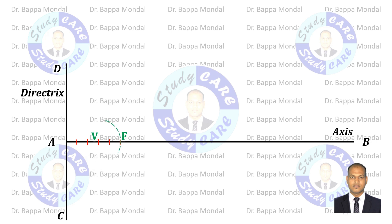Now draw an arc by making the center point at V with 20 millimeters radius. Then draw a perpendicular line which will intersect the arc at point C. Join point C and point A and extend up to a certain length. Then draw some lines parallel to the CV line as shown.